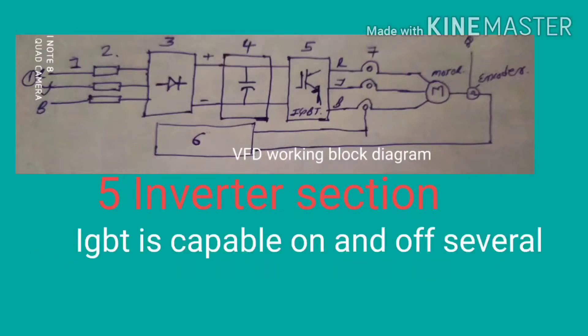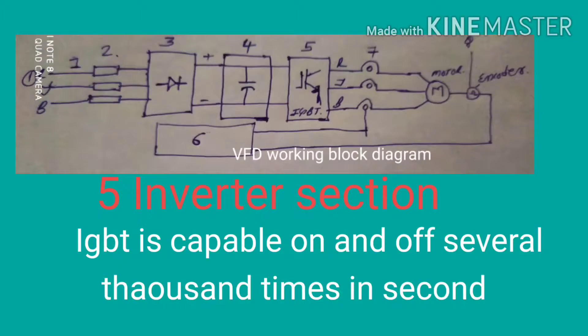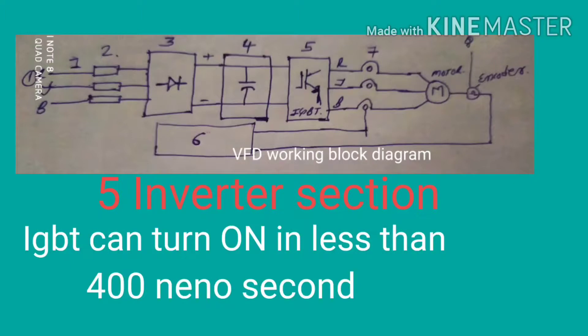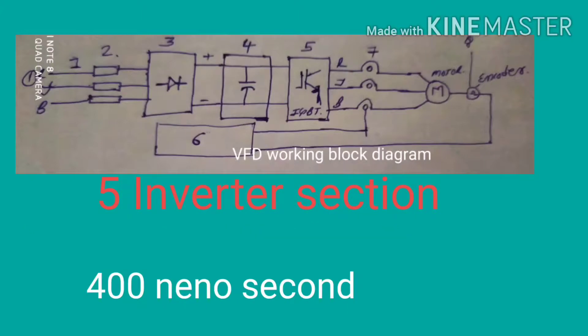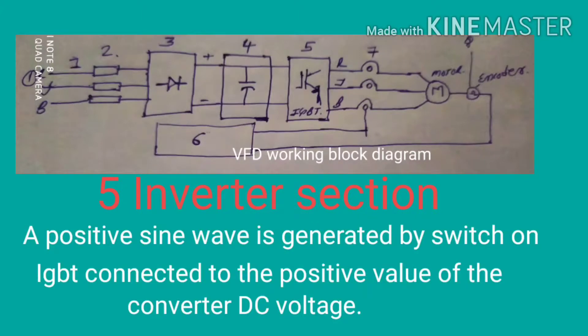Thousands of times in a second. Due to this, we can easily convert DC voltage into AC voltage. The IGBT can turn on in less than 400 nanoseconds. Turn on and off in less than 400 nanoseconds.